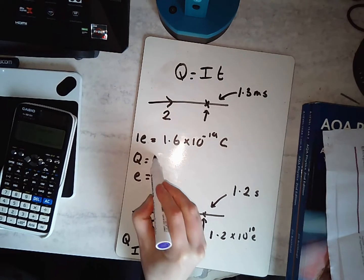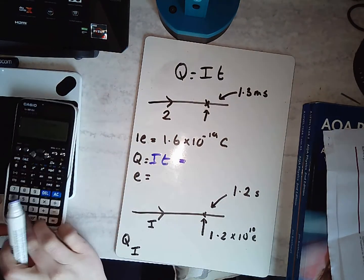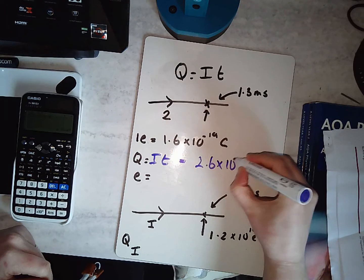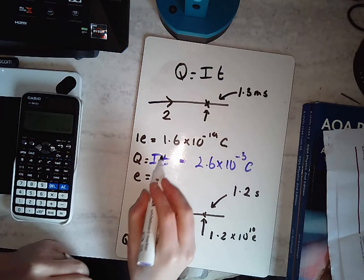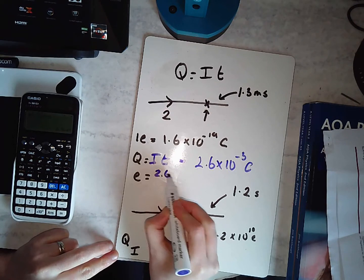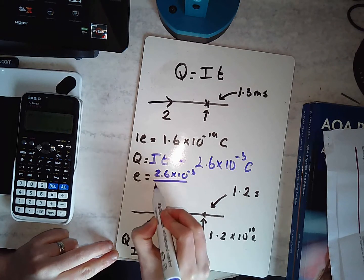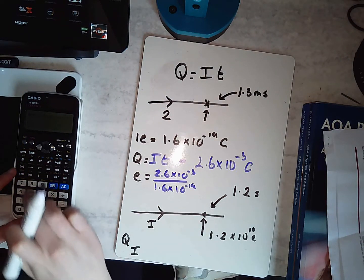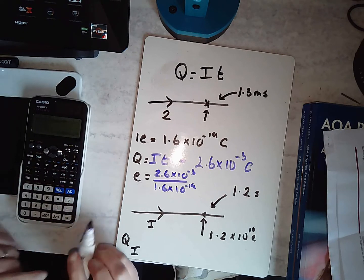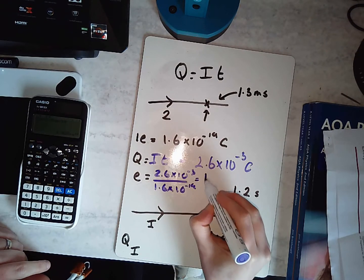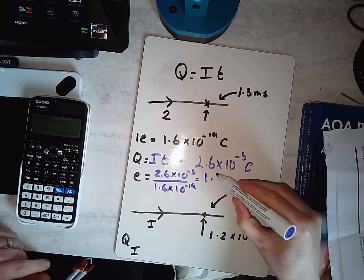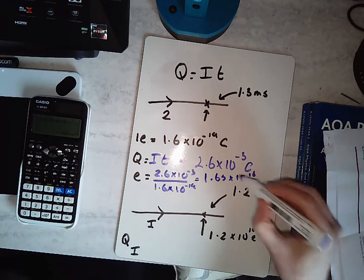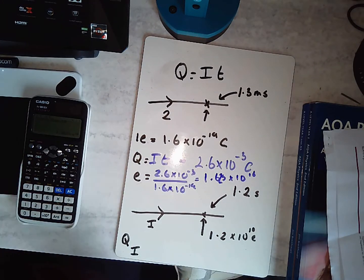For this one, Q = IT, so I've got 2 times 1.3 times 10 to the minus 3. I've got a total charge of 2.6 times 10 to the minus 3 coulombs. To work out how many electrons go past, I divide 2.6 times 10 to the minus 3 by 1.6 times 10 to the minus 19, and I get 1.625 times 10 to the 16 electrons going past this point.